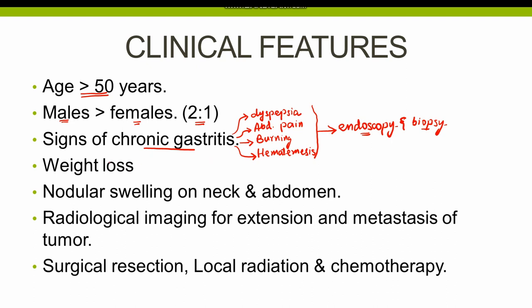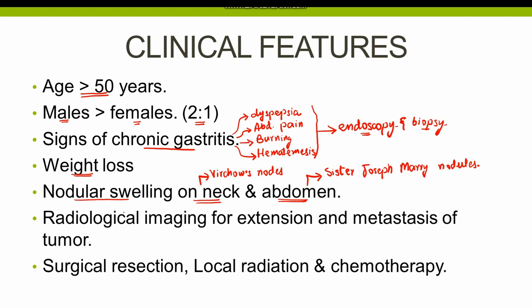More apparent symptoms of gastric carcinoma include weight loss and a nodular swelling present on the neck and often in the abdomen. The nodular swelling on the neck is known as Virchow's nodes, whereas in the abdomen it is due to Sister Mary Joseph nodules. Biopsy is mostly taken on endoscopy, and the definitive diagnosis is established on histological studies.